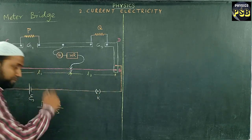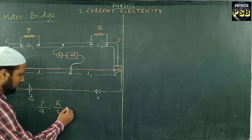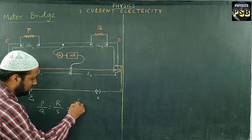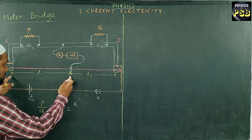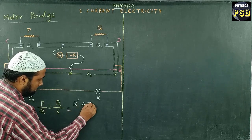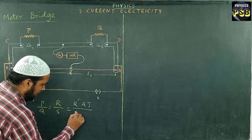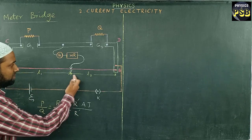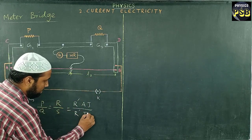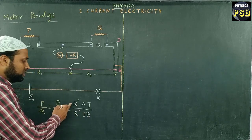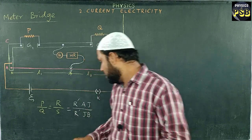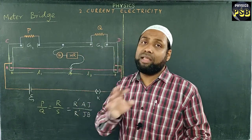What is this R dash? In the place of R, I write R dash into the length of this part of wire, that is AJ, divided by R dash multiplied with the remaining length of the wire, that is JB. R dash is nothing but resistance per unit length.